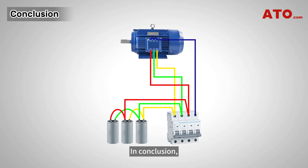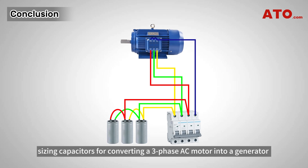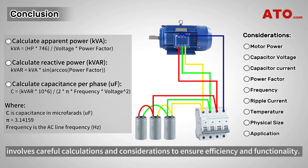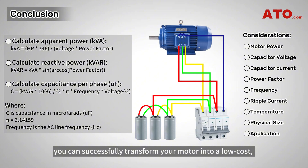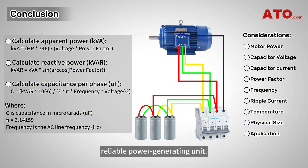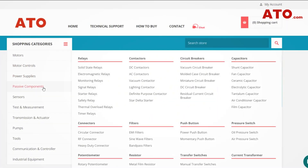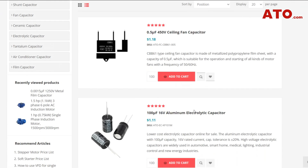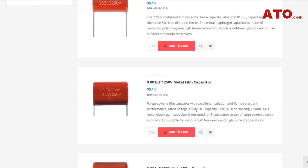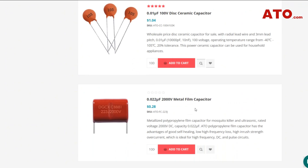In conclusion, sizing capacitors for converting a three-phase AC motor into a generator involves careful calculations and considerations to ensure efficiency and functionality. By following these steps and guidelines, you can successfully transform your motor into a low-cost, reliable power generating unit. As an industry-leading electronics provider, ATO offers diverse products to help optimize power, automation, and energy needs for a wide variety of market applications.